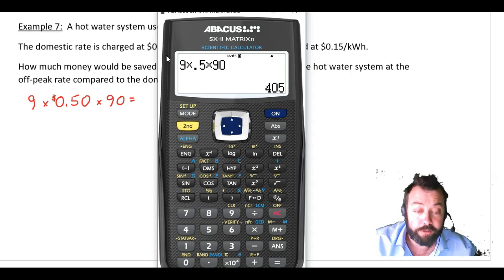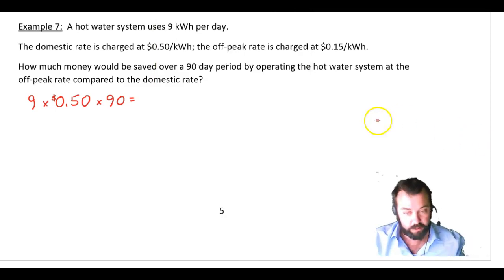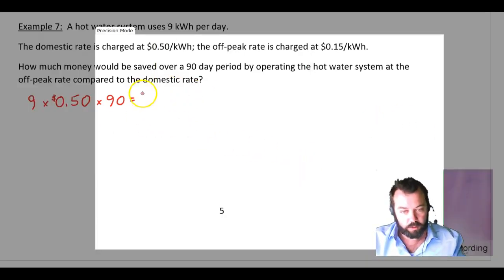That's going to cost me $405 for my three months for running the hot water system on the domestic rate. So let's write this down here. We said that was $405.